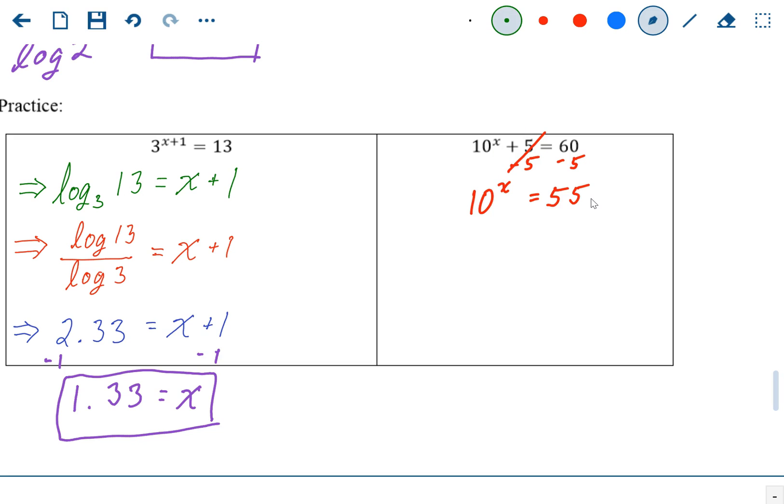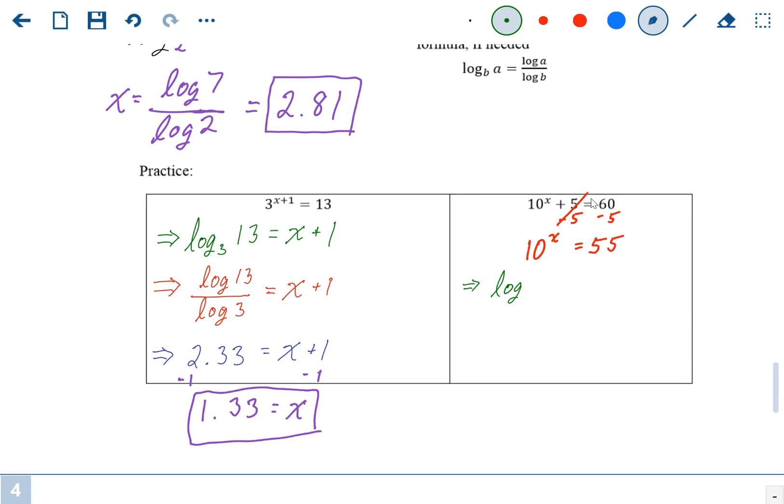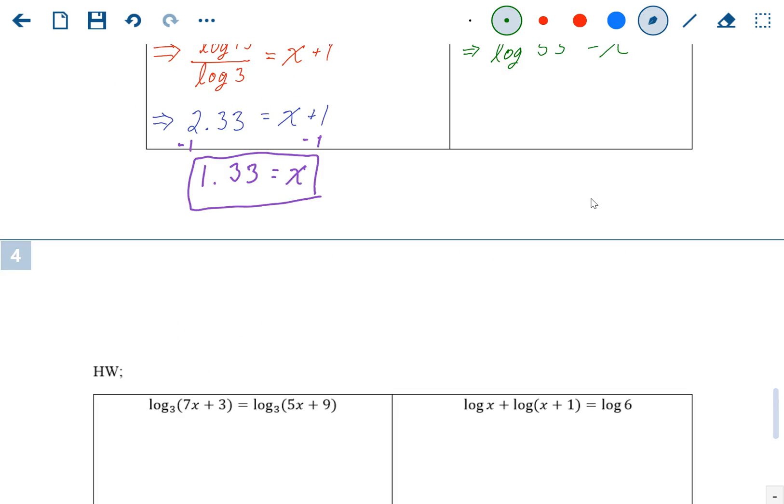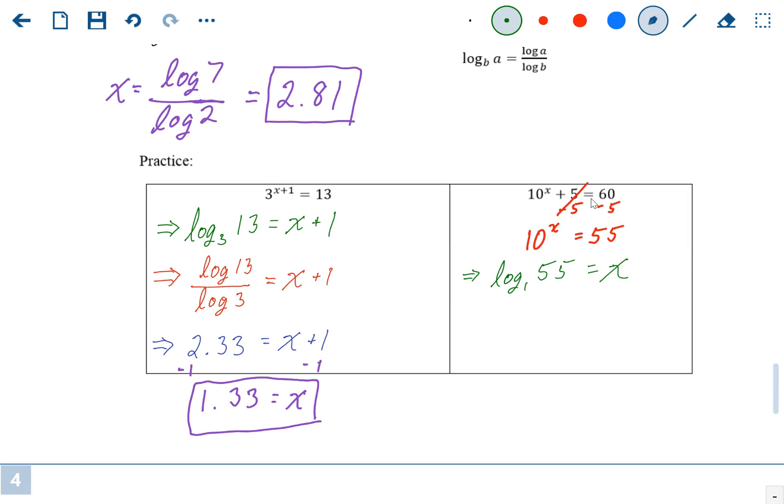Convert to a log: log base 10, so that's a common log of 55 equals x. This one actually turns out to be a little easier than normal because we could do log base 10 of 55. Remember, log base 10 is just the common log, the calculator log. The button on the calculator that says log is log base 10. So in your calculator, you can just plug in log 55, hit enter.